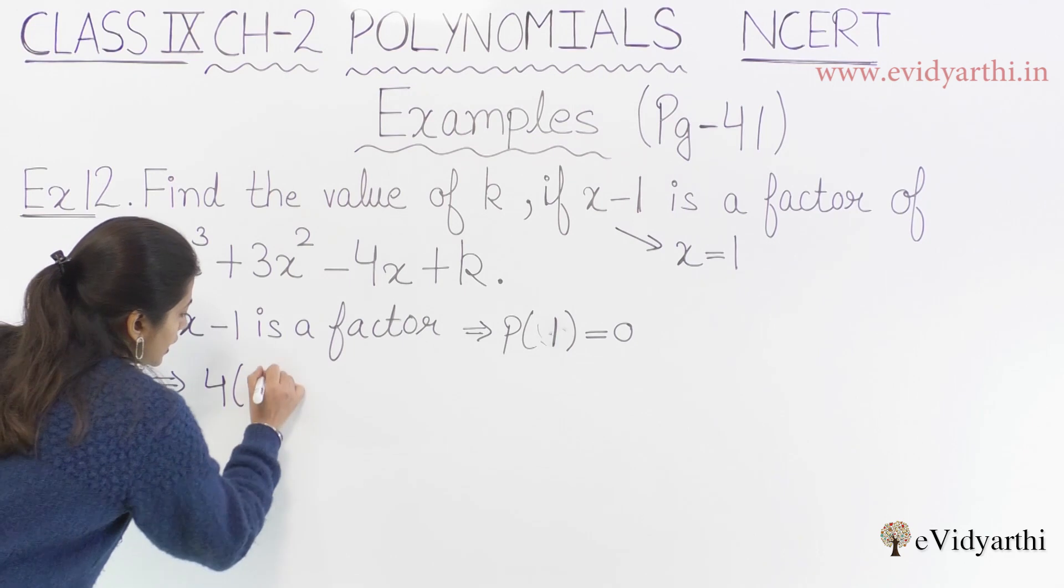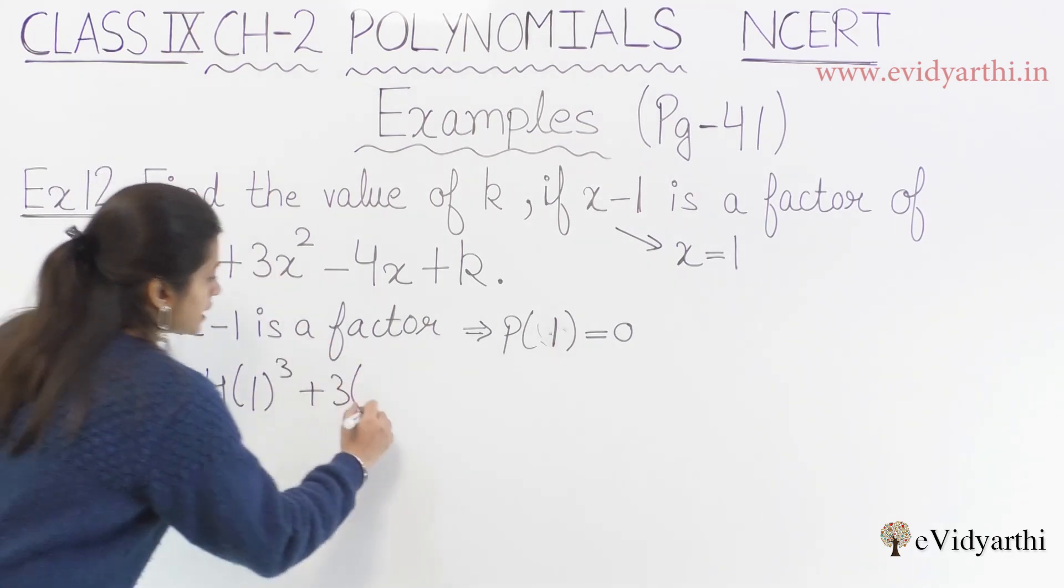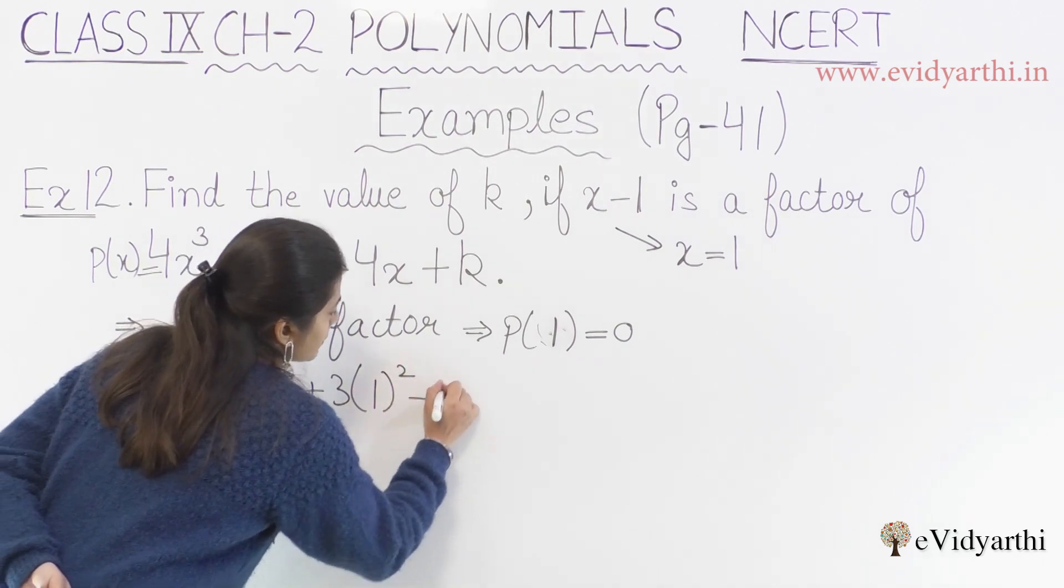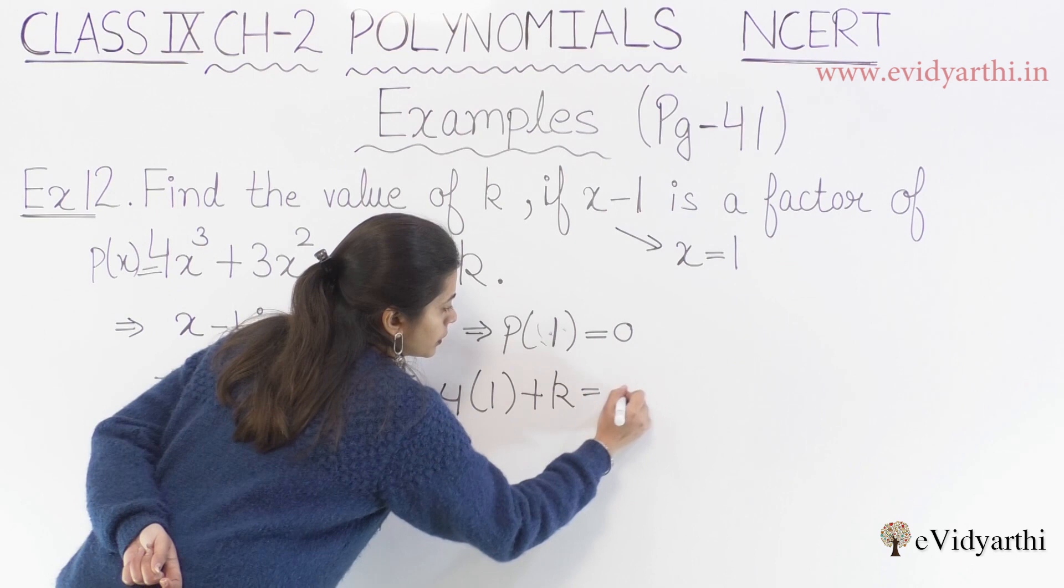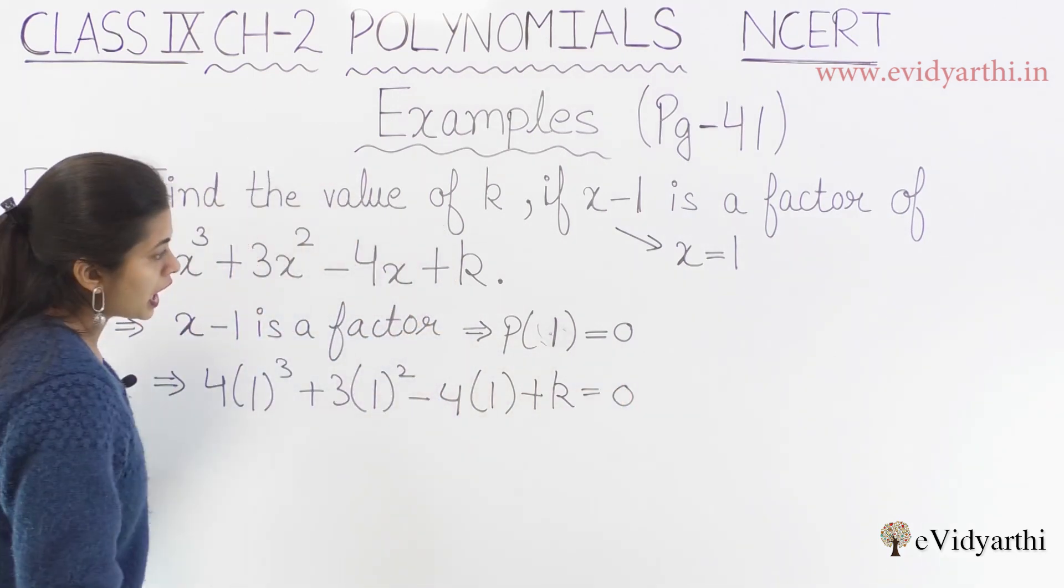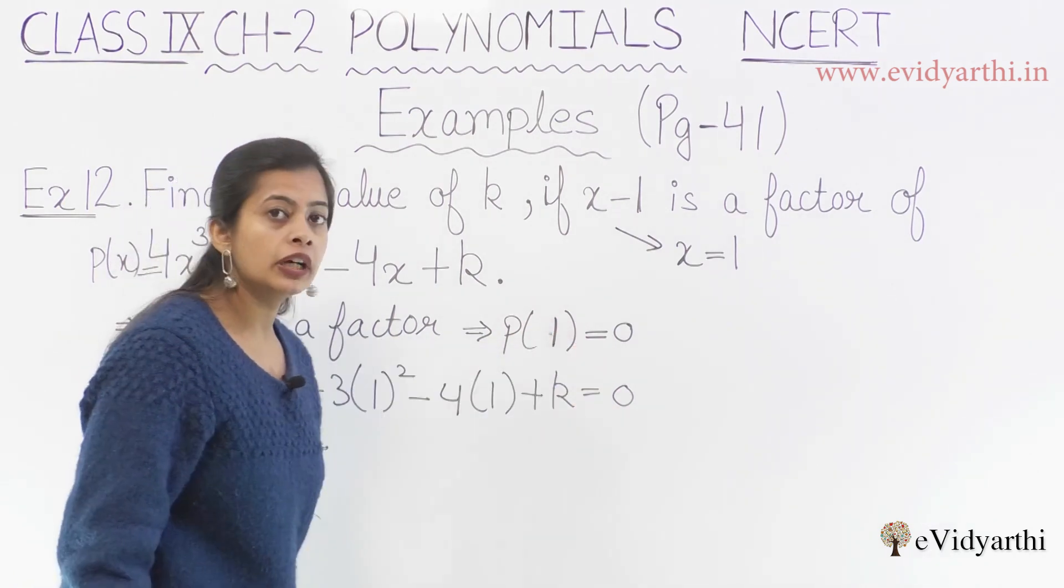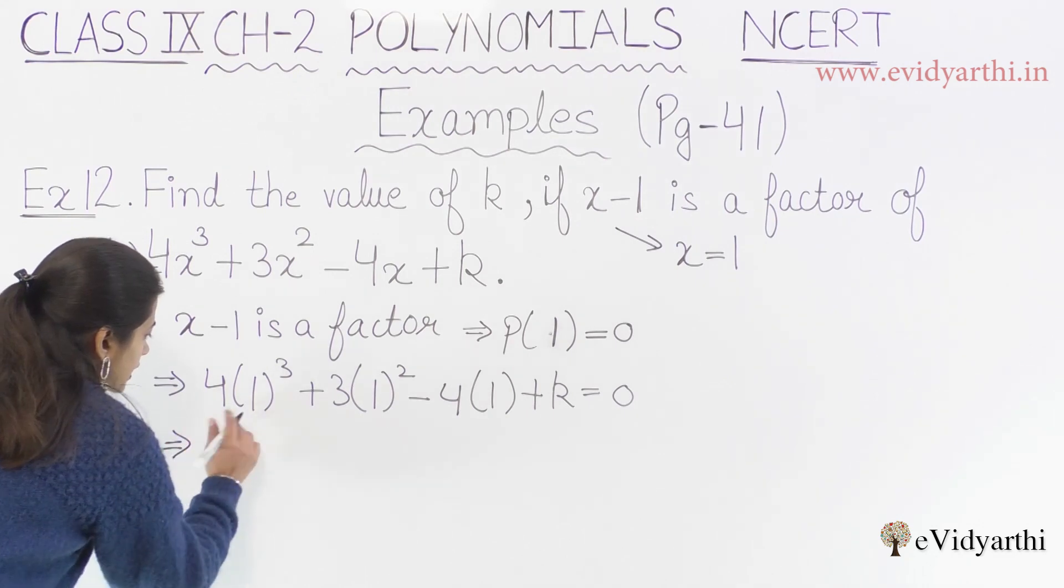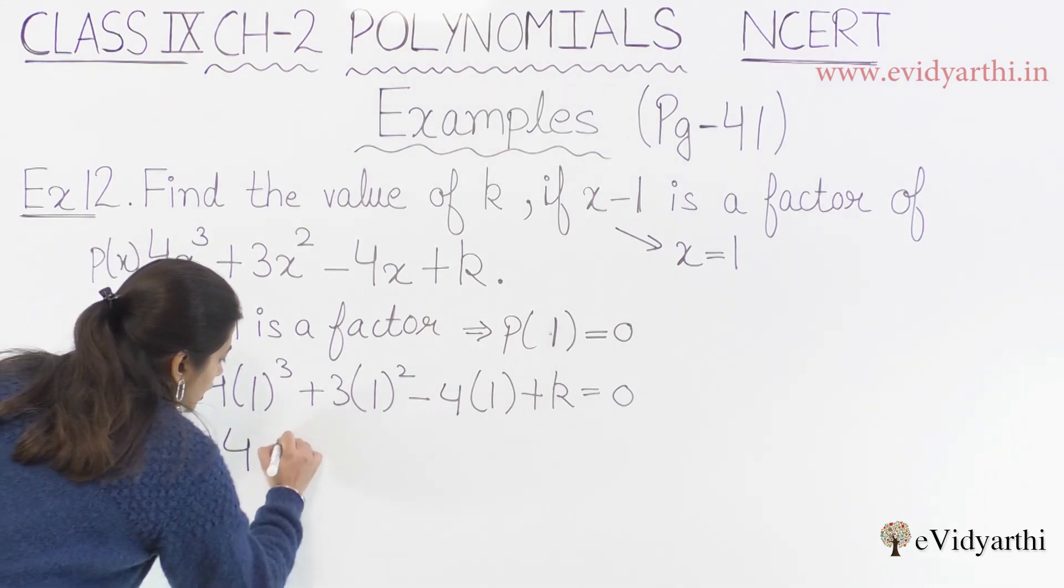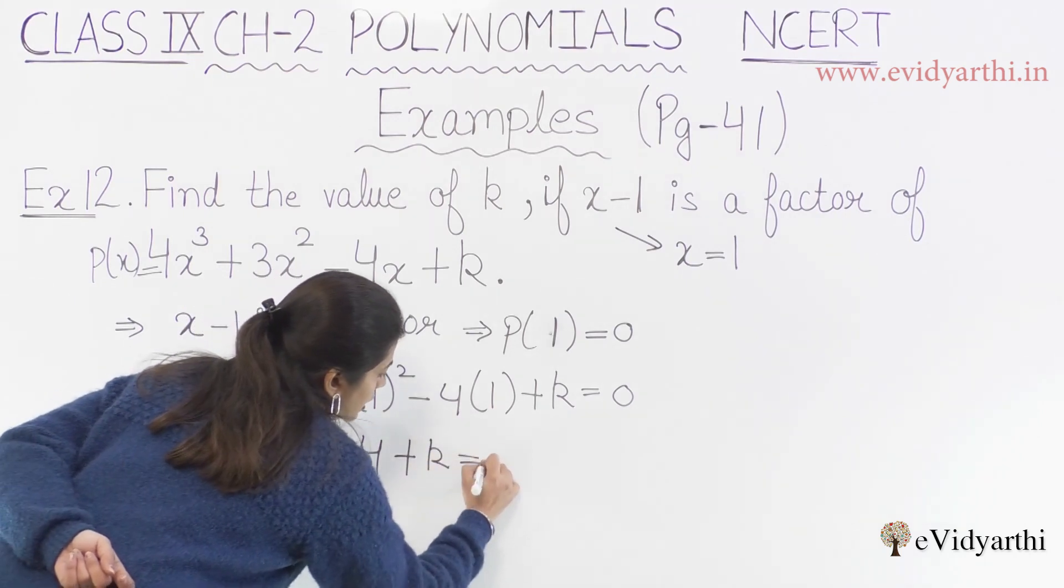If we put 1 in our polynomial, the answer will be equal to 0. So what are we going to do? 4 plus 3 minus 4 plus k is equal to 0. How are we going to do this calculation?